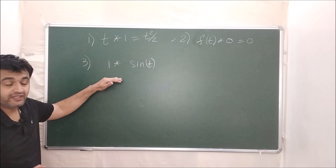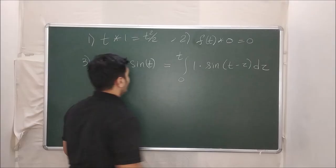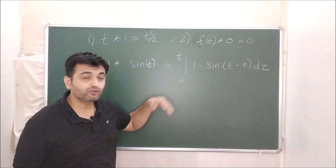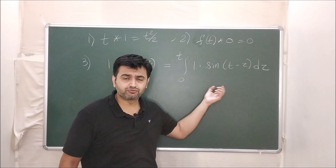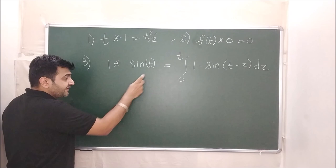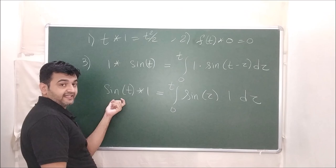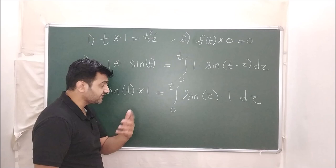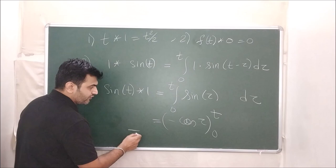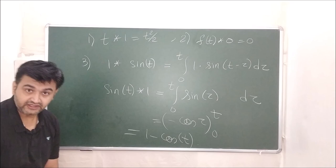Example: find 1★sin(t). Using the convolution formula this is the integral of 1·sin(t−τ) dτ. But since convolution is commutative, we can instead compute sin(t)★1, which is the integral from 0 to t of sin(τ)·1 dτ. Integrating sin(τ) gives −cos(τ), evaluated from 0 to t, giving 1 − cos(t). So 1★sin(t) = 1 − cos(t).